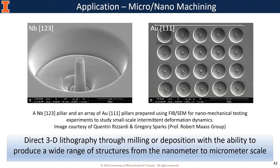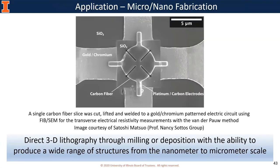FIB is able to make a wider range of structures just by milling. For example, pillars made using circle patterns are prepared for nanoscale compression tests using MRL's nanoindenter to study small-scale intermittent deformation dynamics. Another example: a slice of carbon fiber was cut with a thickness less than one micron, lifted and placed on a gold-chromium patterned electric circuit for transverse electrical resistivity measurement. Four incisions were made with FIB cutting, and the four electrodes electrically connecting the fiber slice with the circuit were also made by FIB deposition.